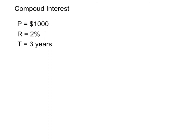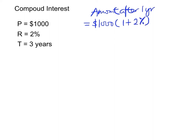We can illustrate this by using calculation. We first find the amount after one year. This will be $1,000 times (1 plus 2%). So the amount is P times (1 plus RT). Since we have only one year, this will be only 2%. We can easily find out this will be $1,020, and this $1,020 will be the principal for the second year.